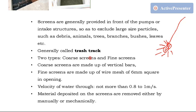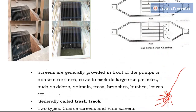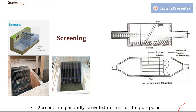There are two types of screens: coarse screens and fine screens. Coarse screens remove coarser material and fine screens remove finer material. Coarse screens are made up of vertical bars as shown, and fine screens are made of wire mesh with usually 6 mm square openings. The velocity of flow should not be more than 0.8 meters per second when water is approaching the screen. Material deposited on the screen is removed either manually or mechanically — the screens are rotated continuously so that deposited material can be removed.